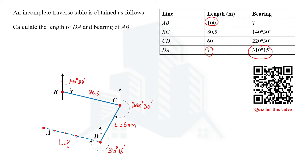Looking at the closed traverse, the AB line could be in the northeast quadrant or in the northwest quadrant, so both are possible. Let's start doing the calculations to determine which quadrant the line falls in.